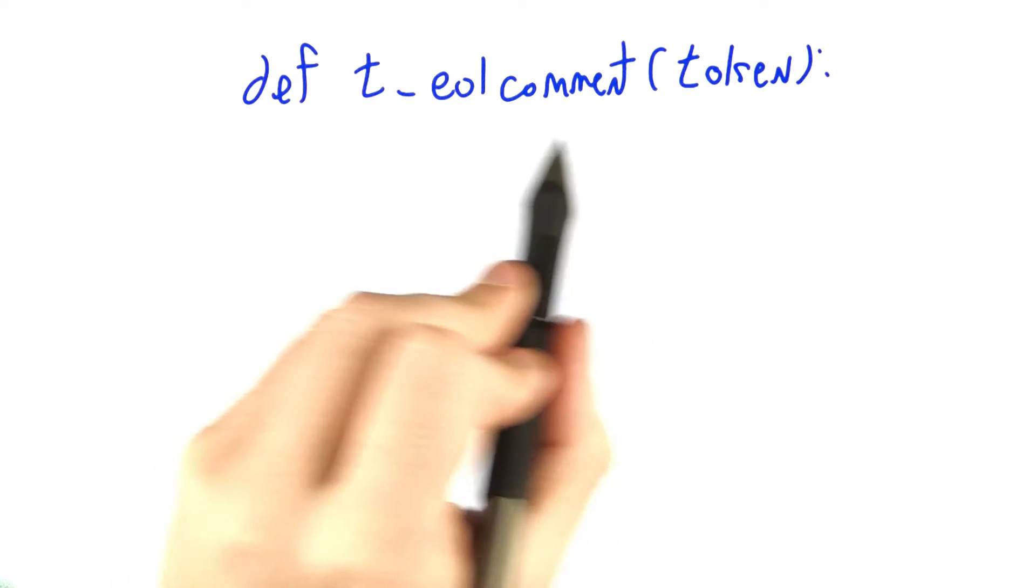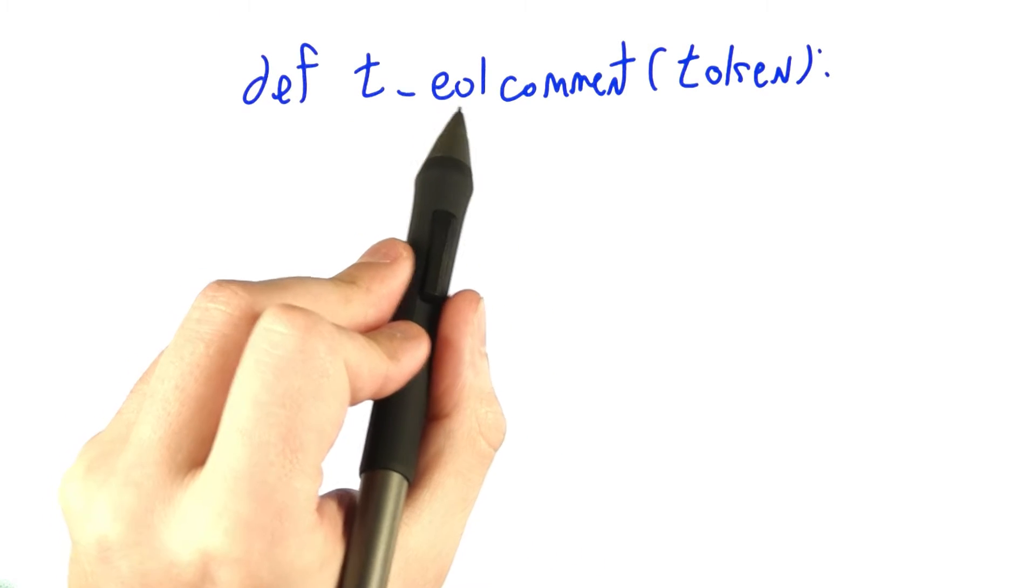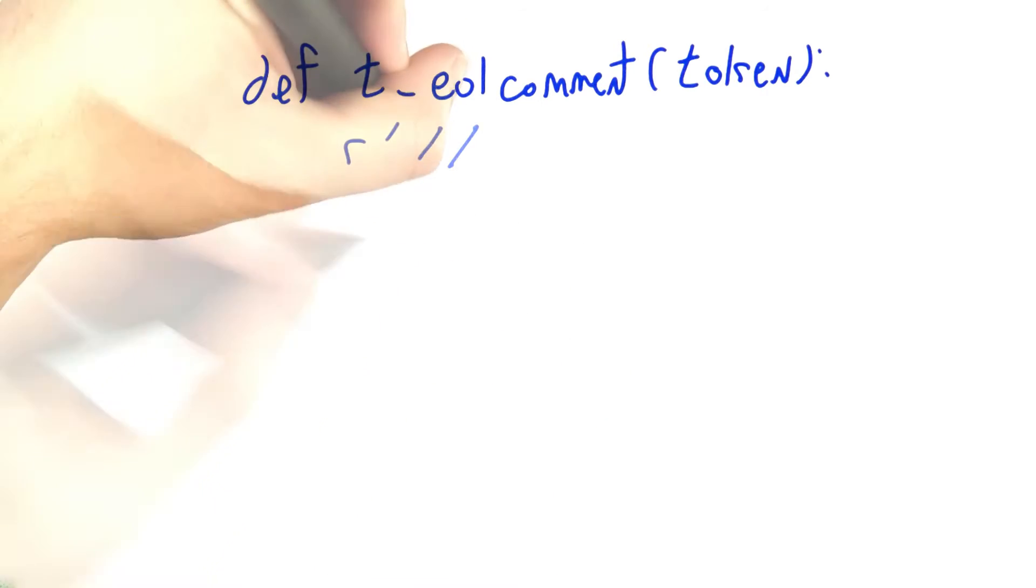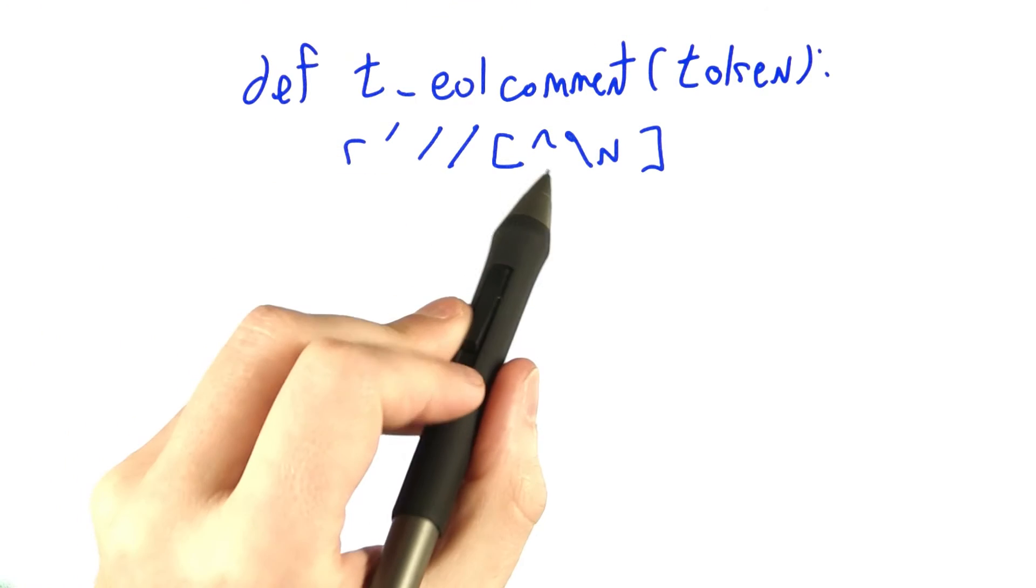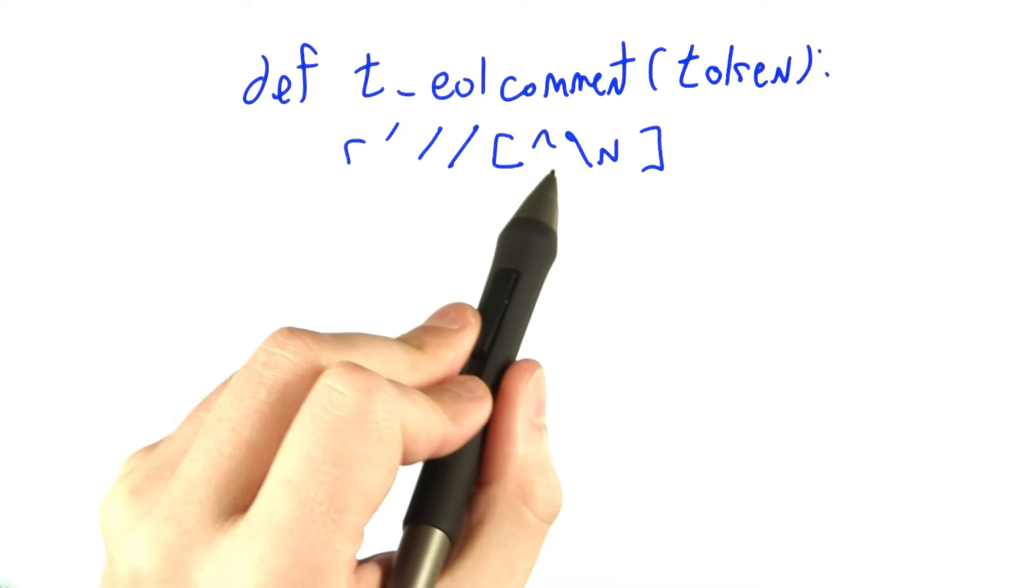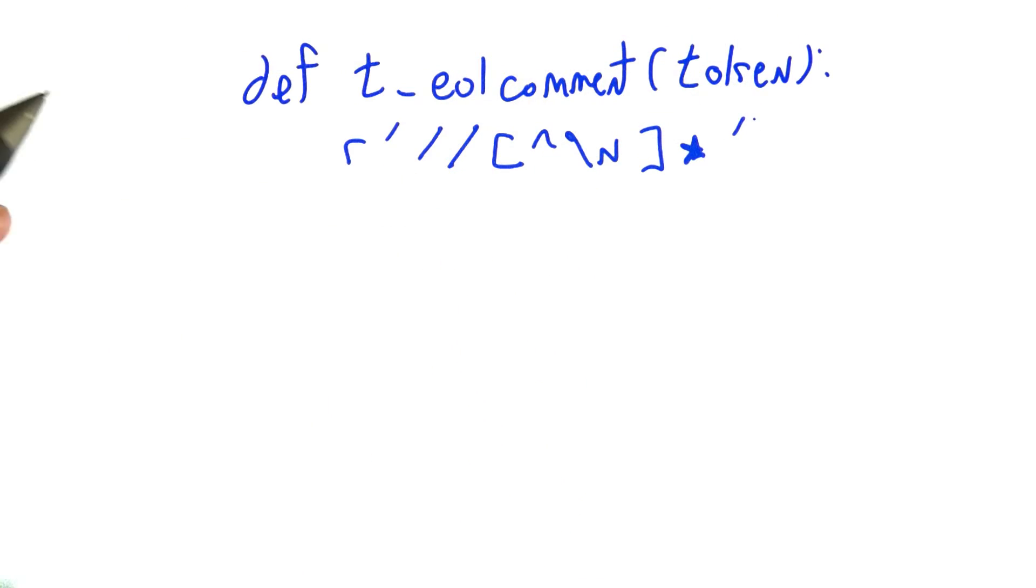This time I'll write the rule for you. Here's a rule corresponding to comments that go to the end of the line in JavaScript. They start with a slash, and then another slash, and then you can have anything that's not our special new line character, as many of those as you want.